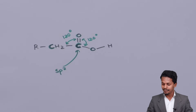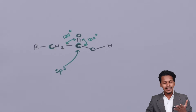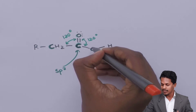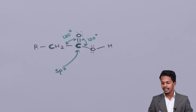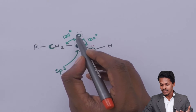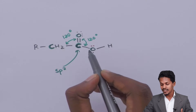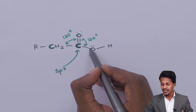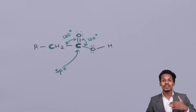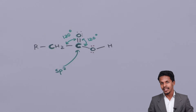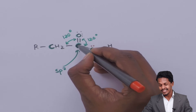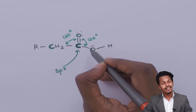Now, oxygen consists of lone pairs of electrons. Here also the oxygen in the carboxyl group consists of lone pairs of electrons. Along with the C=O double bond, the adjacent oxygen also has lone pairs of electrons, so this system will undergo resonance — that is, delocalization of electrons — across the carbon and both oxygens.